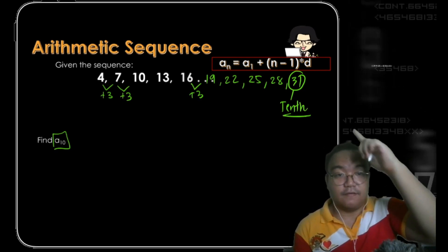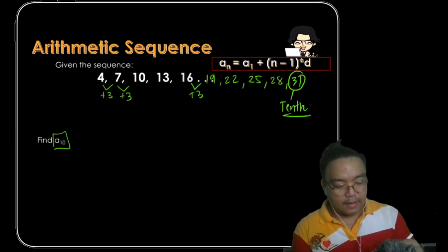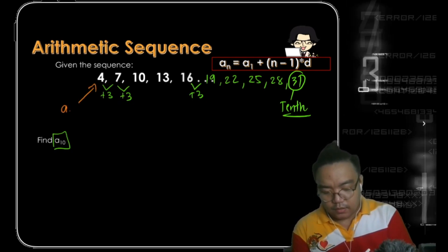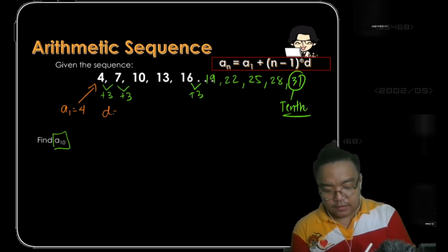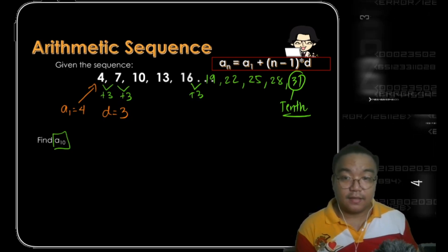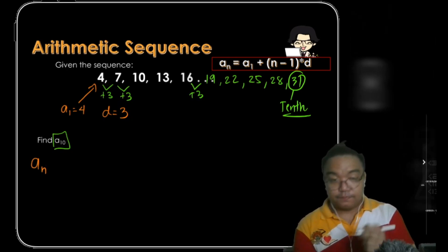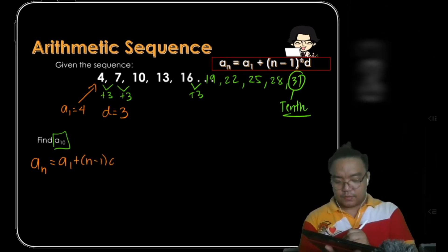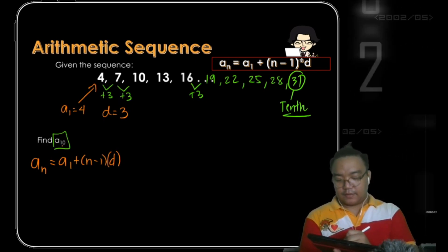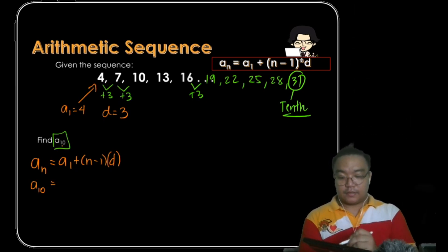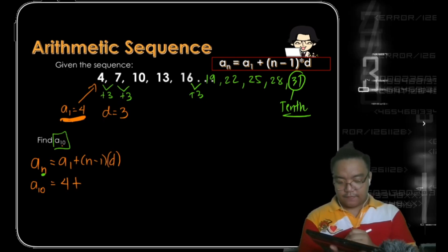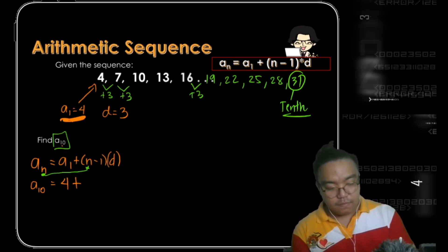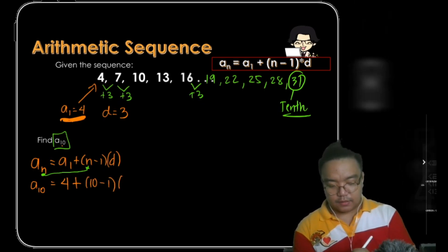But how do we apply the formula? Let's list down the important values: a sub 1 equals 4, and the common difference equals 3. To find the 10th term using the formula a sub n equals a sub 1 plus (n minus 1) times d, we substitute: a sub 10 equals 4 plus (10 minus 1) times 3.